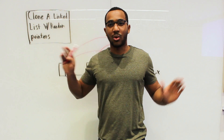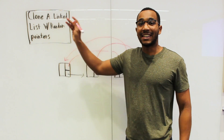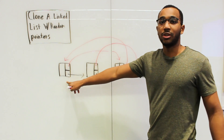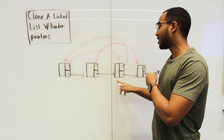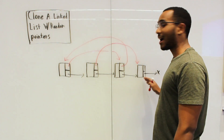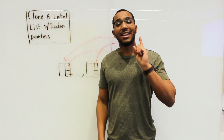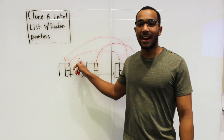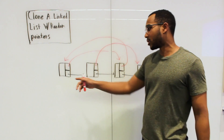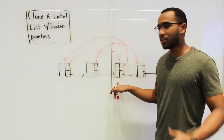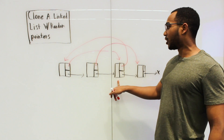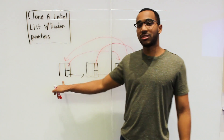Our interviewer gives us a question. They say: we have a linked list — a standard linked list. You see node, we have a next pointer, we have a node, we have a next pointer, and so on. Every node has a next pointer, but it not only has a next pointer — it also has a random pointer. These red arrows signify a random pointer. So the first node is pointing to the second node. The second node is pointing all the way to the last node. And the third node is pointing all the way back to the first node.